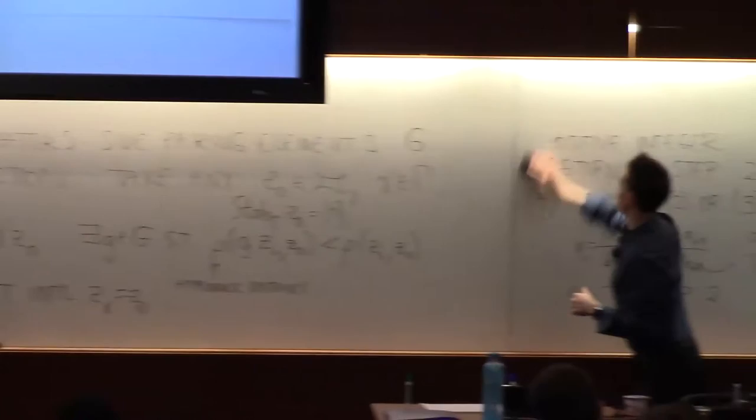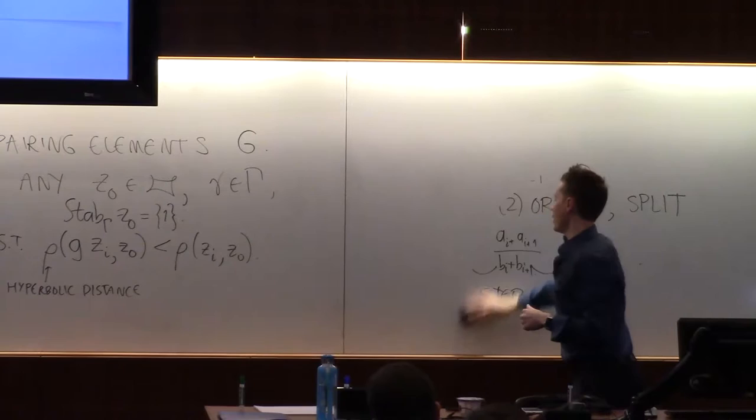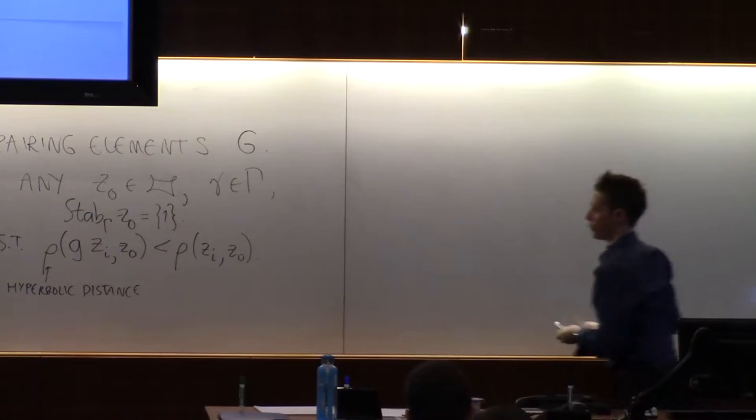Sorry, this is a dumb question, but why is the stabilizer z0? Oh, well, at the end here, you have an identity. That's a good question, it's not... no questions are dumb.